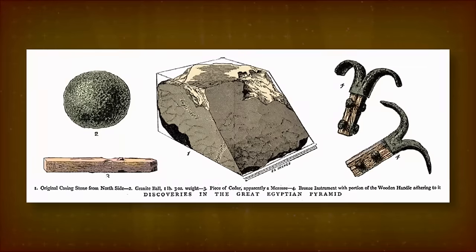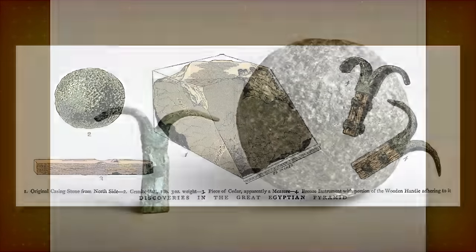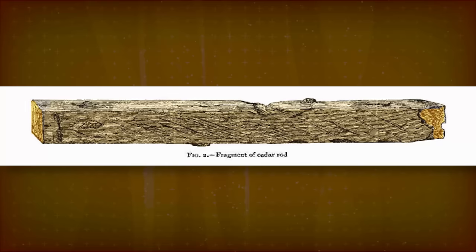In the shafts, Dixon discovered a few objects sealed inside since the pyramid's construction. A small granite ball, a double-hook tool made of copper or bronze, and a cedar rod, likely the tool's handle.